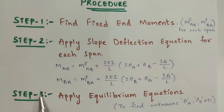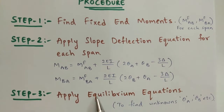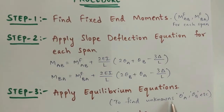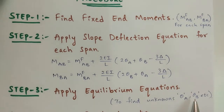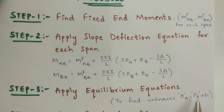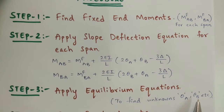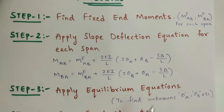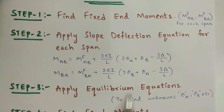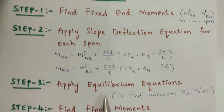Next, in the third step, you have to apply the equilibrium equations to find the unknowns theta_A and theta_B. How many unknowns there are will be determined by the support conditions. So in the third step, you have to apply the equilibrium equations.